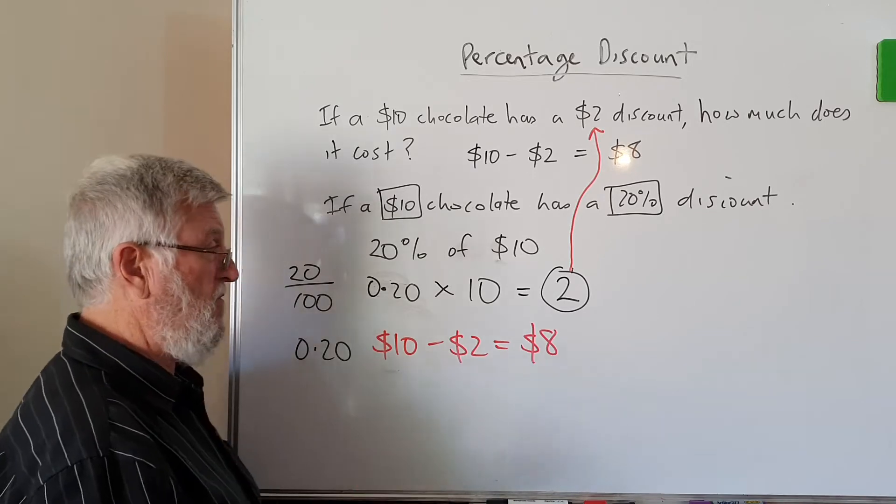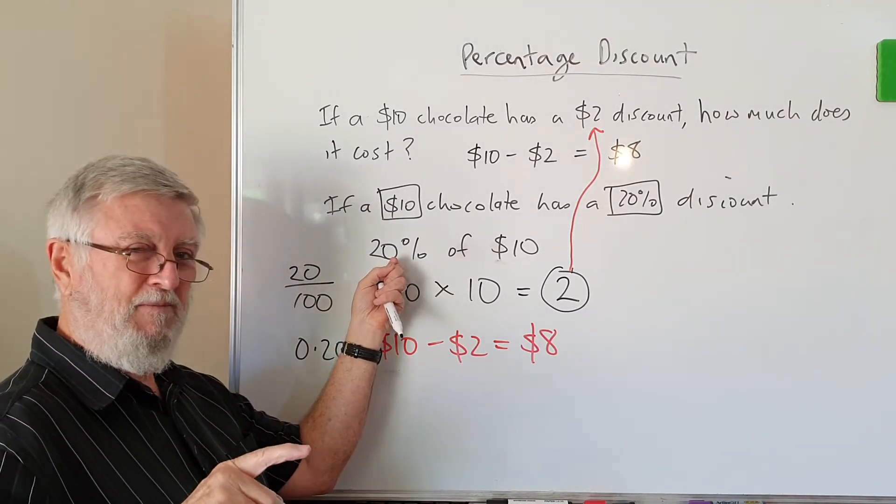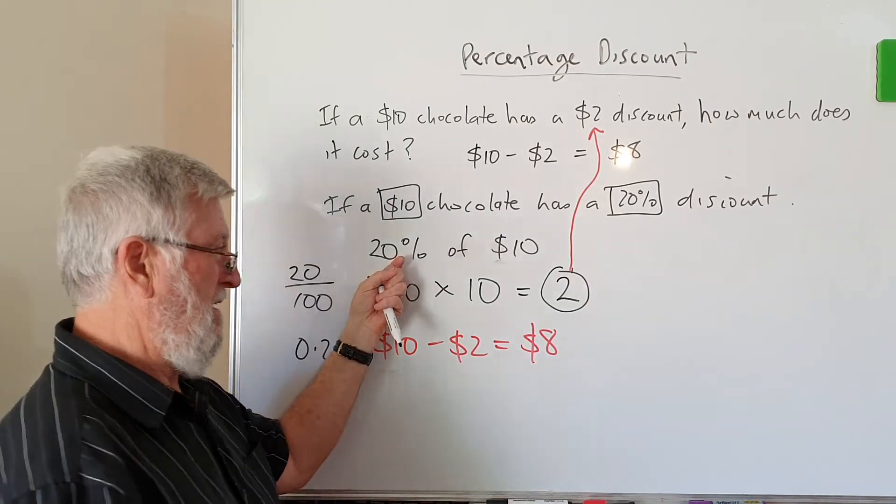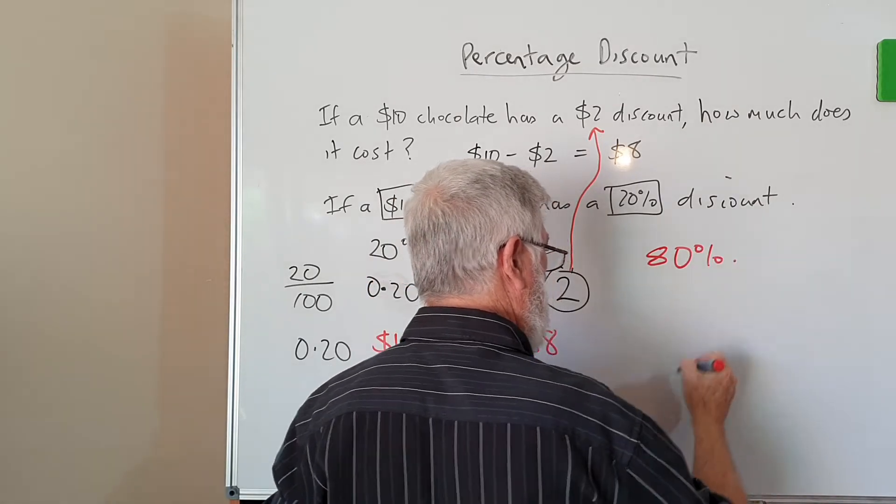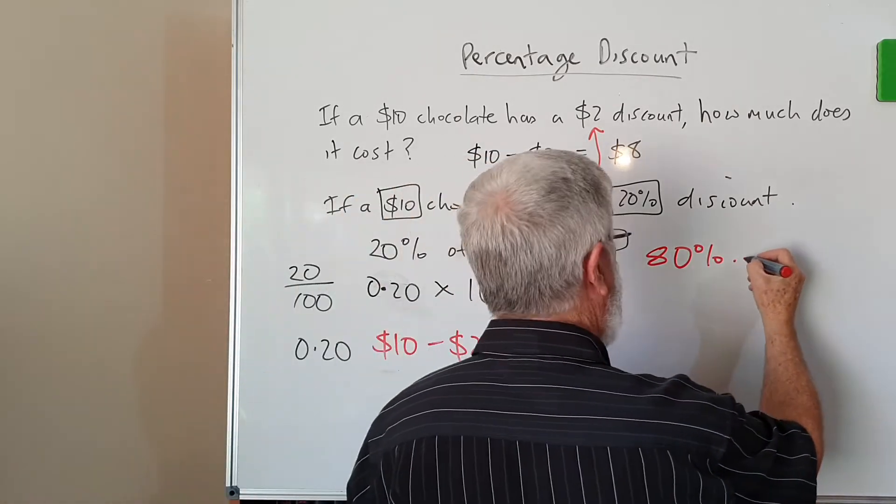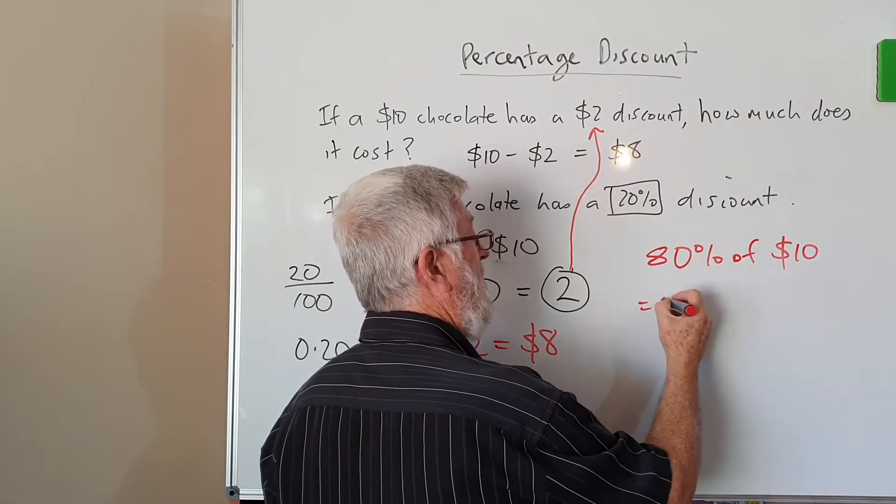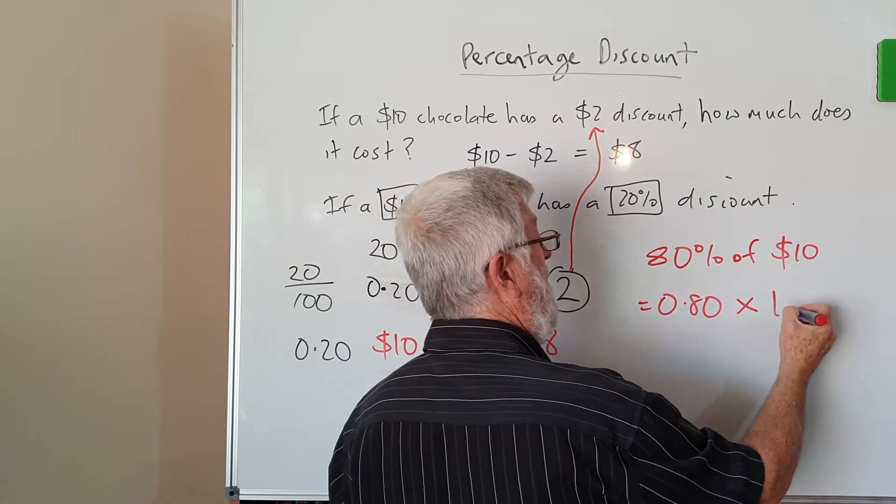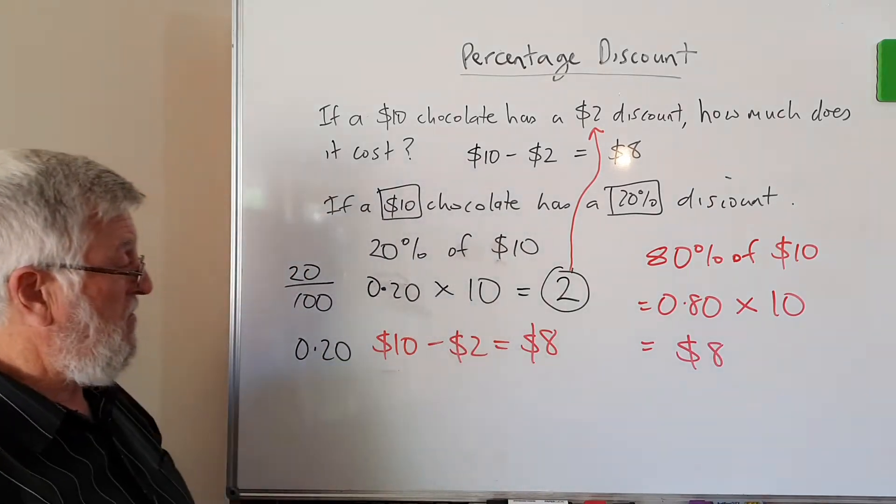Now, for some of you, if it works for your brain, when I get a 20% discount, I don't think of the 20% discount. I think of how much was left over. So 20% ends up becoming 80%. So if I said 80% of $10, I can write that as 0.80, 'of' is times or multiply, and that's 10.